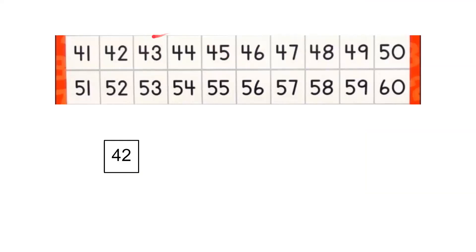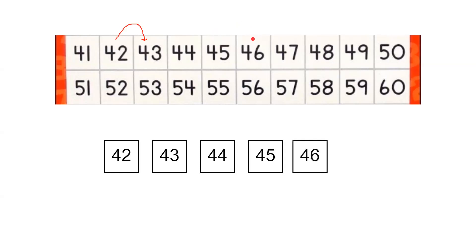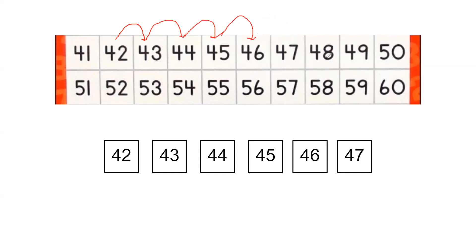It starts jumping from 42. If it jumps from 42 by one, where will the frog reach? It will reach 43. Then it makes one more jump — where will it reach? It will reach 44. It skips one more number — where will it reach? It will reach 45. By jumping one more number, it will reach 46. Then again by jumping one more, can you guess? It will reach 47. Like this, you can draw on the number line: one jump then 44, then 45, one more jump reaches 46. You can draw and check for yourself.